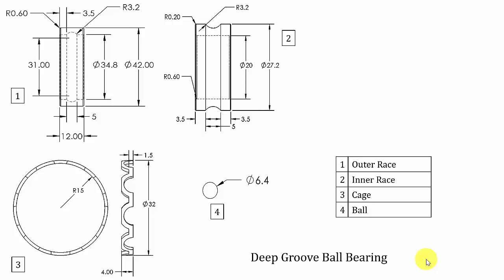Hello all, welcome to the SOLIDWORKS tutorials. In this tutorial I am going to show you how to draw the ball bearing using SOLIDWORKS. The ball bearing assembly has four parts: number one is outer race, number two is inner race, number three is cage, and number four is ball. First I am going to start with the outer race.